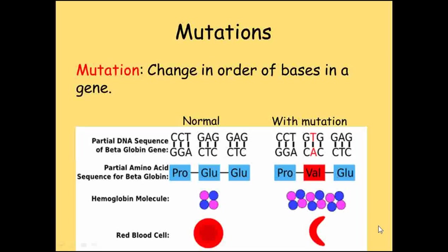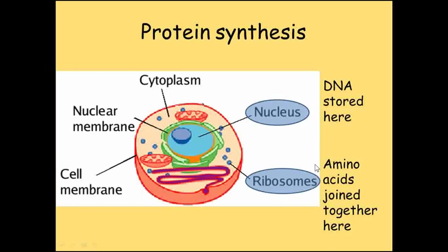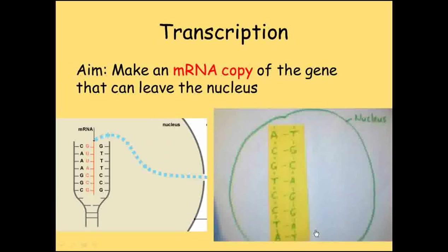If we look at a typical animal cell, we can see the structures we're familiar with. We're looking at protein synthesis, so there are two areas of the cell we're interested in. The nucleus is where the DNA is stored, and the ribosomes found in the cytoplasm are where the amino acids are joined together to make the protein.